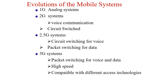Now we are going to see how mobile devices have actually evolved. Analog systems — 1G, 2G, 2.5G, 3G systems. First generation used only analog systems. Second generation used voice communications and circuit switching. By the time we came to third and fourth generation, we are using only packet switching. But second generation always used circuit-switched networks.